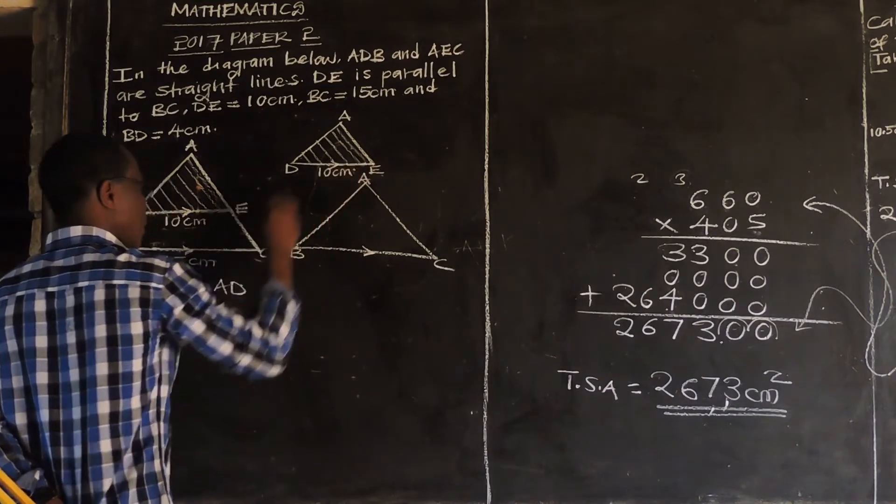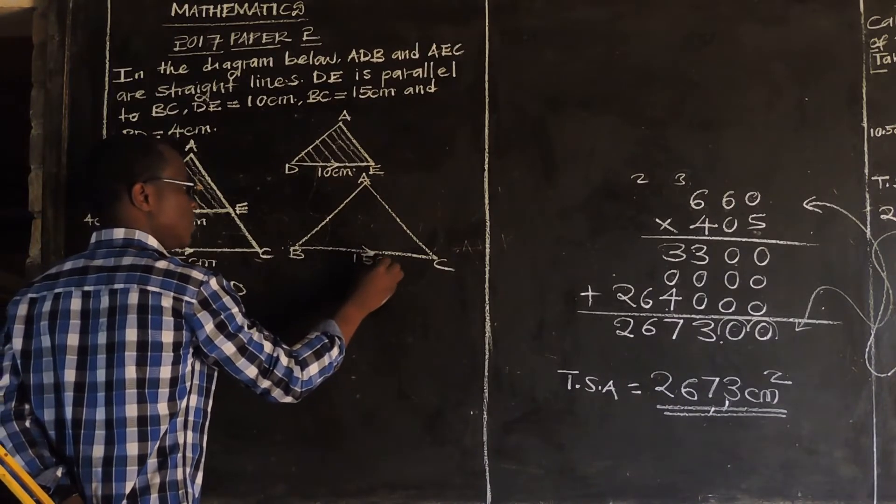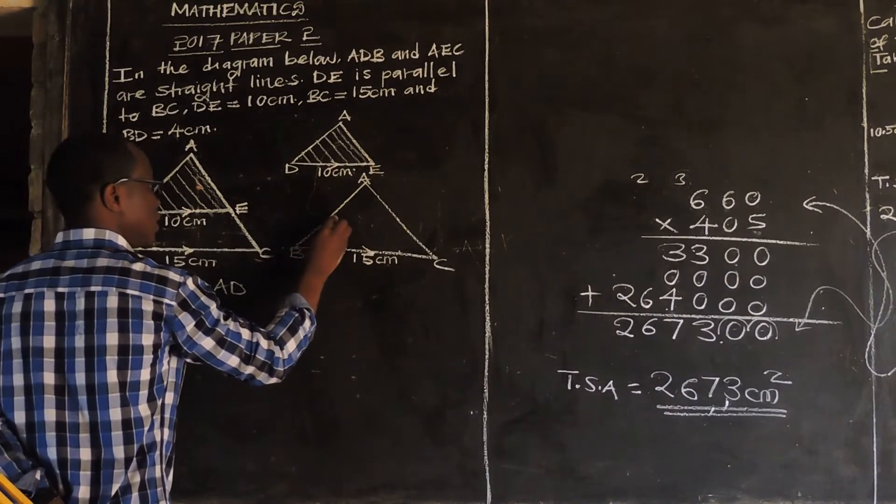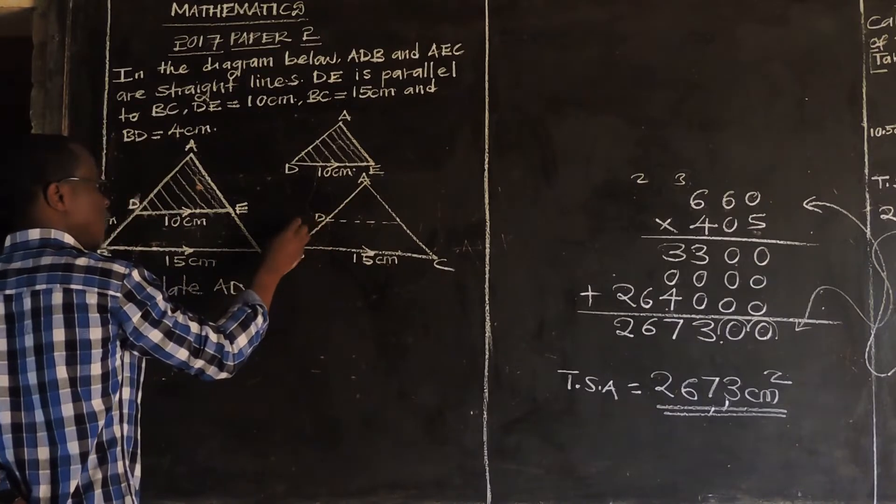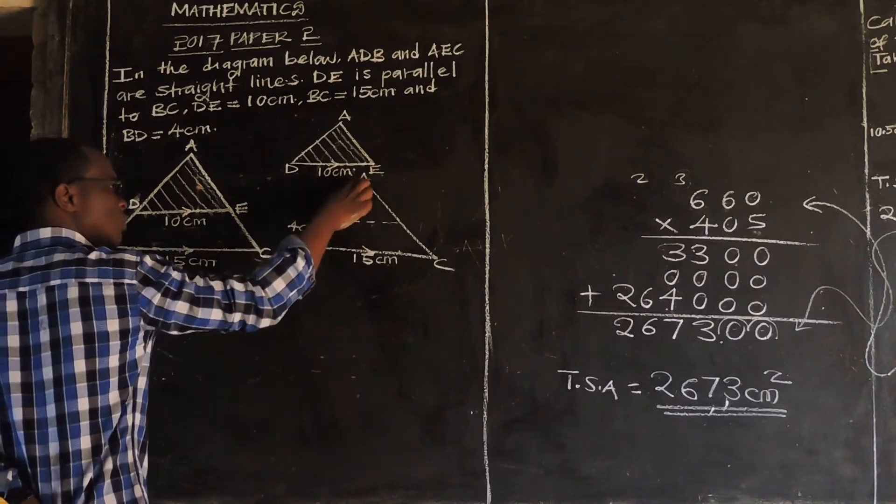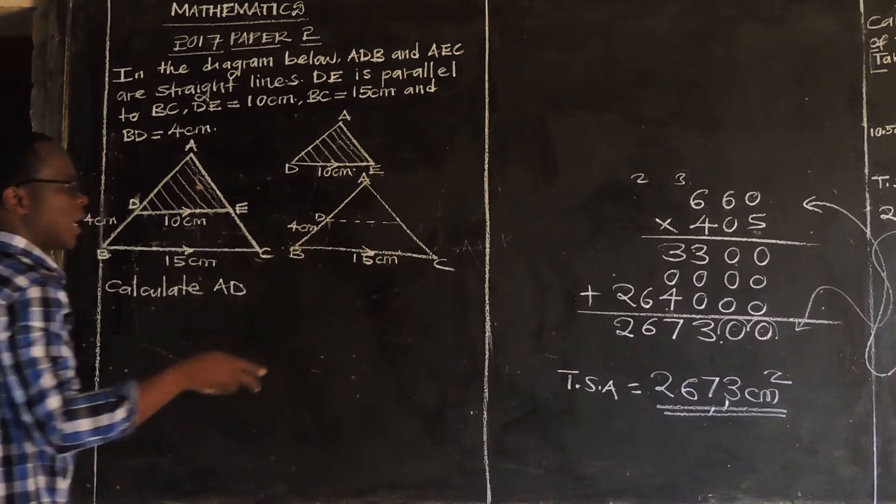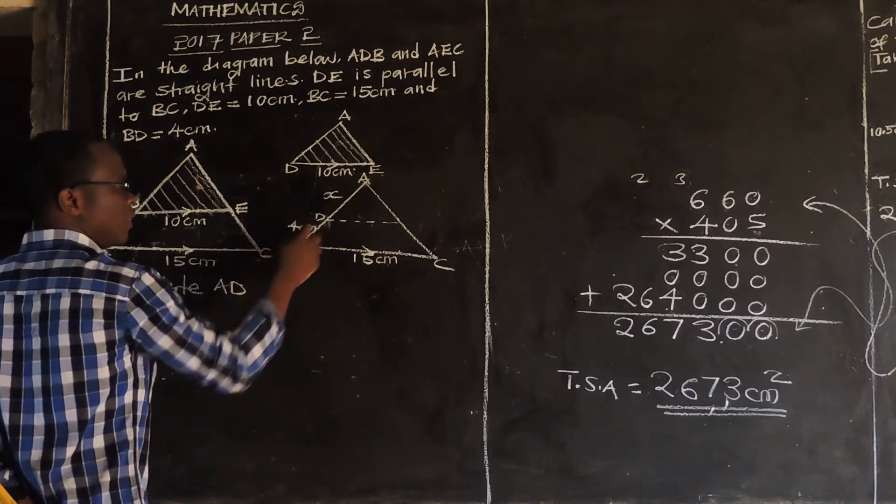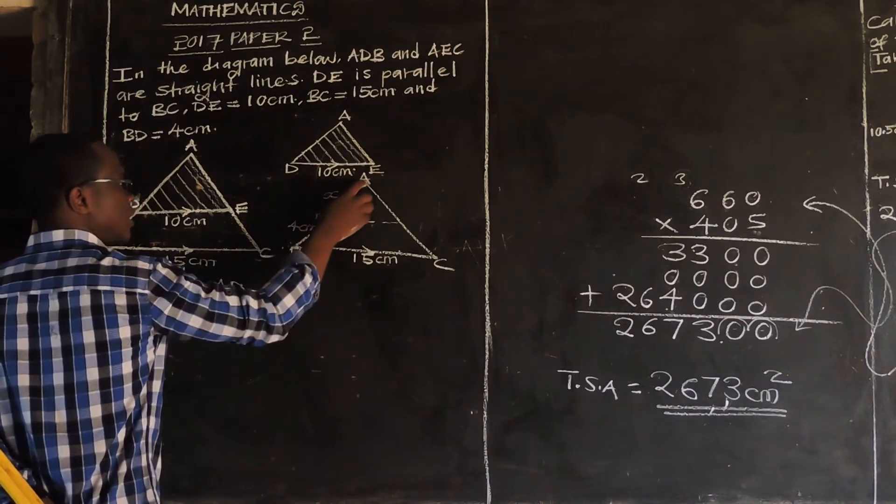We have a big triangle, which is this one, where this is A, then this is B, then this is C. Then these two are parallel. So this one is 10 in this small one, 10 centimeters. Then in this big one, this is 15, 15 centimeters. Then from this point to this point, we have got point D, where this is 4 centimeters. But we don't know this one, which is AD. We can even put a letter like X. Let's just say this is X.